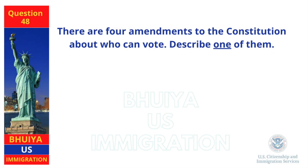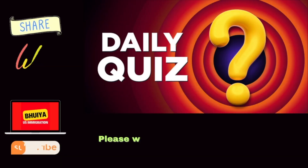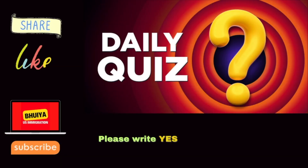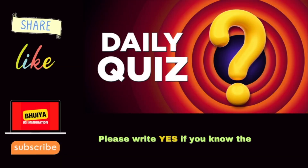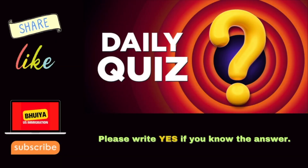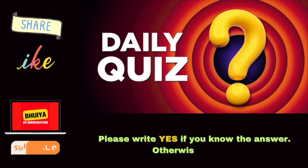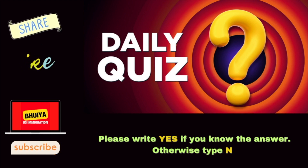There are four amendments to the Constitution about who can vote. Describe one of them.